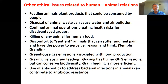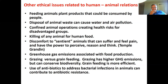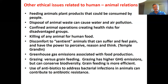Some people would say it is an ethical issue that we raise plants that could be consumed by people and instead use them to feed animals. There are also ethical issues about disposal of animal waste — as I mentioned, confined animal operations in North Carolina generate health risks for particular disadvantaged groups. Some people would say any killing of an animal for food is an ethical issue. Other issues include discomfort to sentient animals, greenhouse gas emissions from food production, grazing versus animal feeding operations, and the use of antibiotics to address bacterial infections in animals.